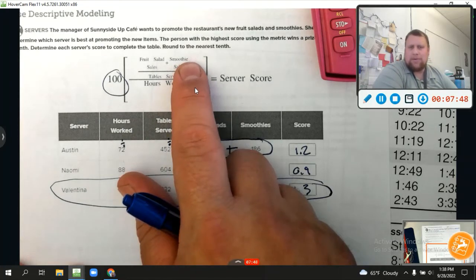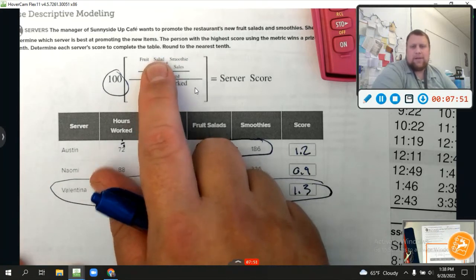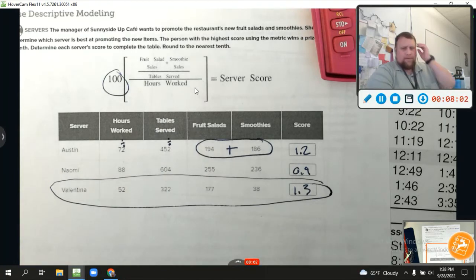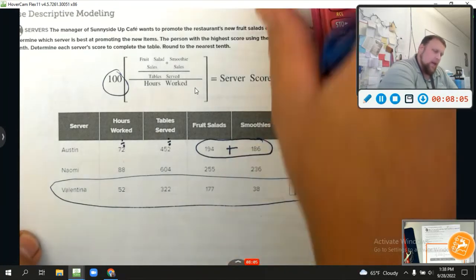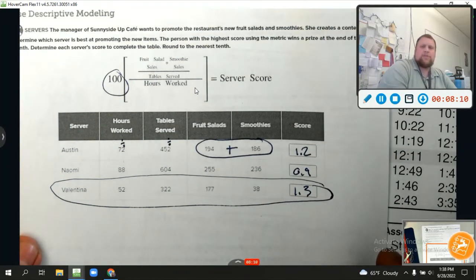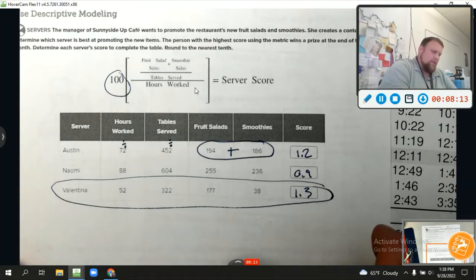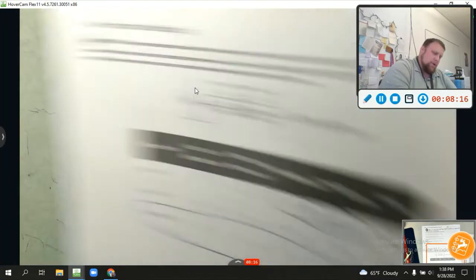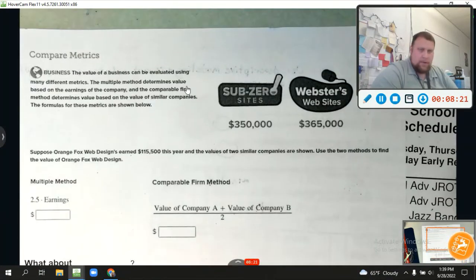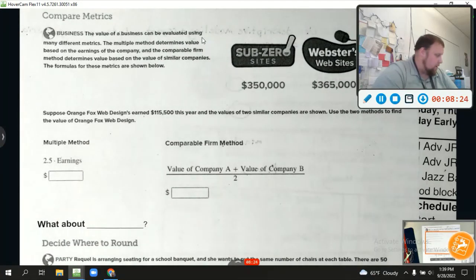Okay. Let's take a look at some different methods. We're going to compare some metrics here. And again, what is a metric? It's just a rule for assigning a number to some characteristics or attributes. Remember that hidden word attributes. Okay. It says the value of a business can be evaluated using many different metrics. The multiple method determines value based on the earnings of the company. Okay. So let's look at that. The multiple method determines value based on the earnings of the company. And the comparable firm method determines value based upon similar companies. The formula for these metrics are shown below.